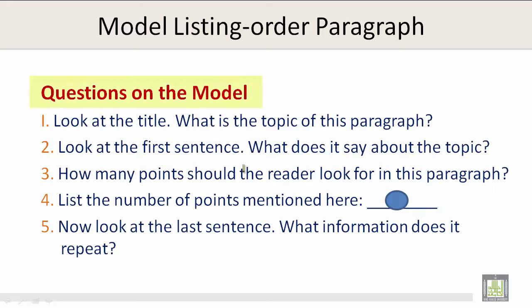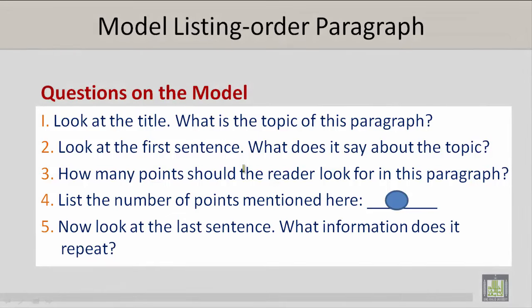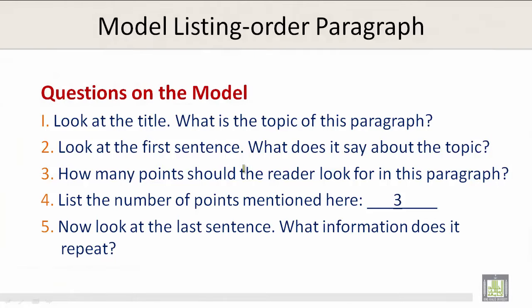Questions on the model. Number one: look at the title — what is the topic of this paragraph? Number two: look at the first sentence — what does it say about the topic? Number three: how many points should the reader look for in this paragraph? Number four: list the points mentioned, which is three. Number five: now look at the last sentence — what information does it repeat? Please begin this exercise on your own and take a look at the theme.